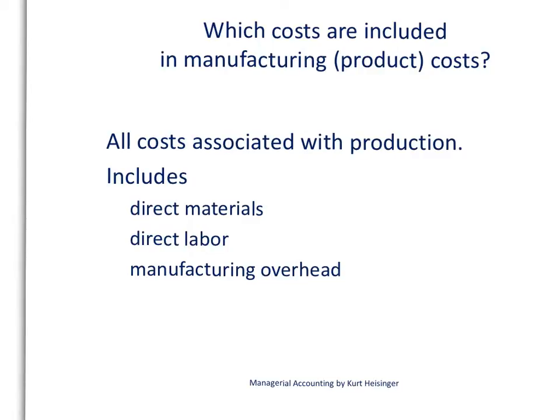We will start with manufacturing costs, which are also called product costs. These are all the costs that are associated with production. We will use the example of producing high-end racing road bikes to talk about some of the costs that will be considered production costs.